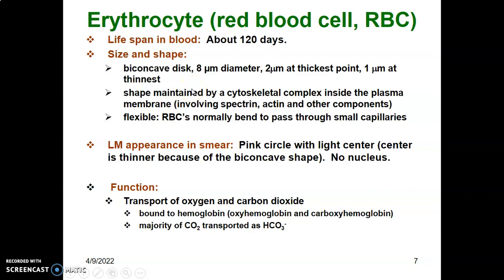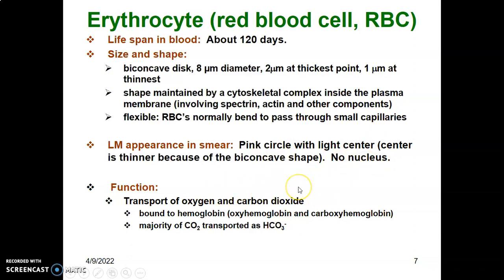The red blood cell is two micrometers thick at the thickest portion and one micrometer at the thinnest. This shape is maintained by a cytoskeletal complex within the plasma membrane, containing spectrin, actin, and other components. The red blood cell is flexible, able to change shape to pass through very small capillaries. Under light microscopy, they appear as pink cells with a lighter center due to the biconcave shape. The red blood cell has no nucleus.